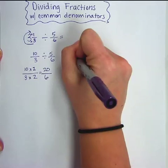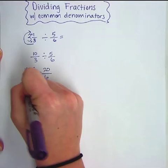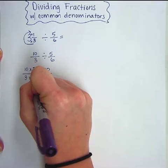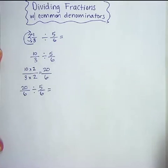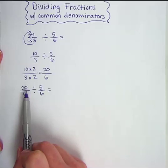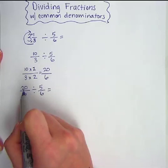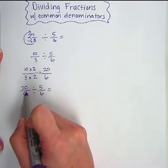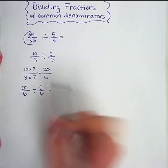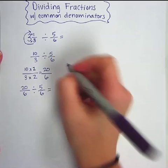So I'll rewrite my problem here: 20/6 divided by 5/6. So now when I'm solving this problem using common denominators, all I have to do now is worry about dividing the numerators. So I'll do 20 divided by 5 and that gives me an answer of 4.